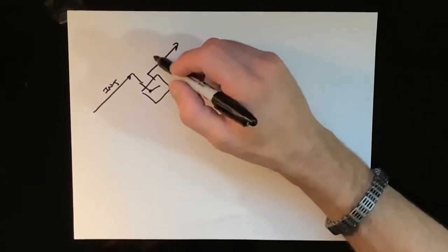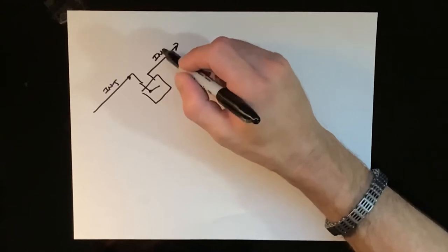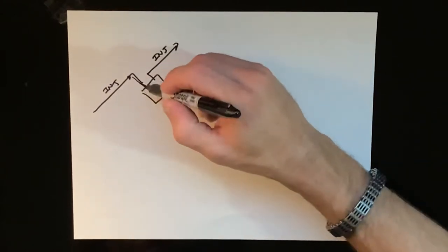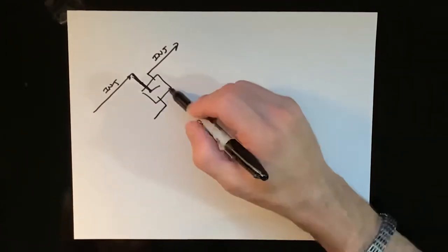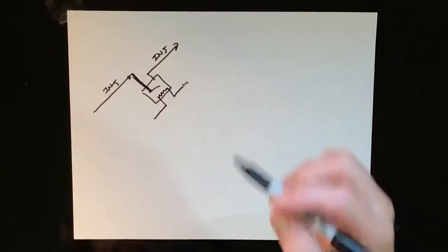This is effectively the ECM fuse being removed, but it's listed as the injectors. Okay, so we're going to disconnect that. You need a power supply and a ground.